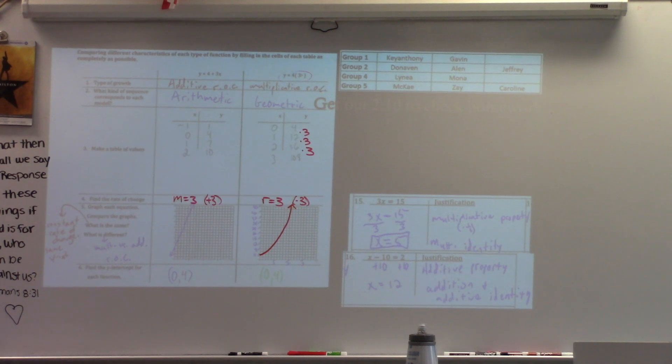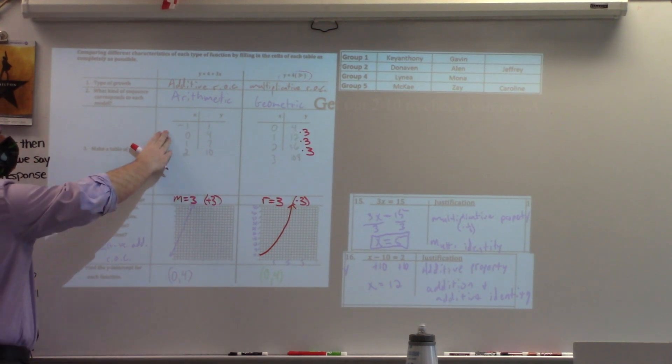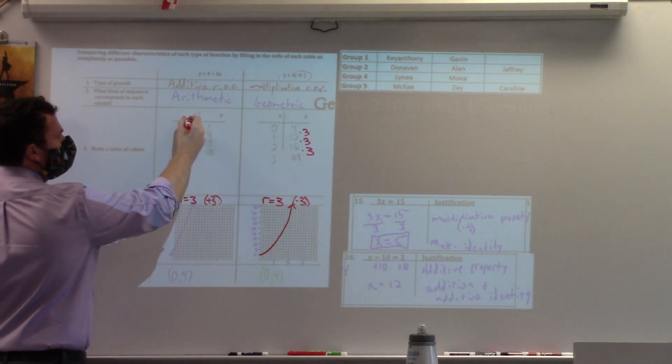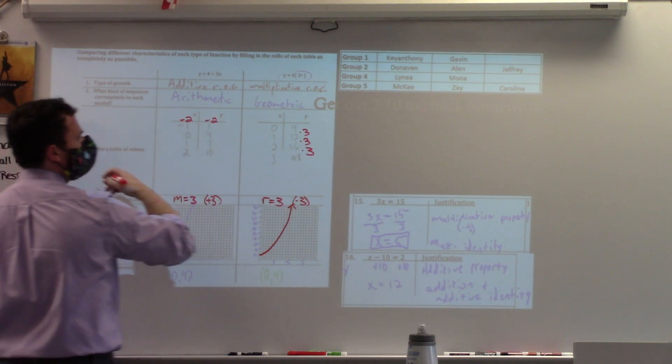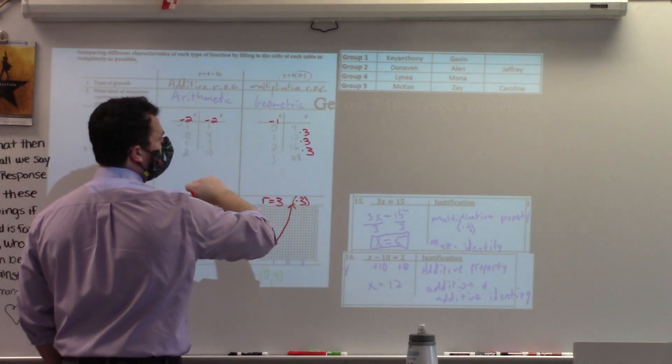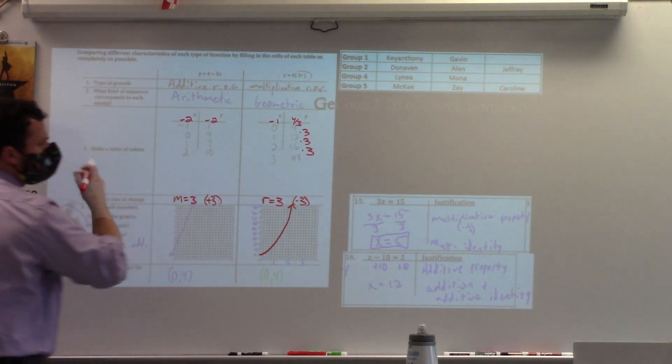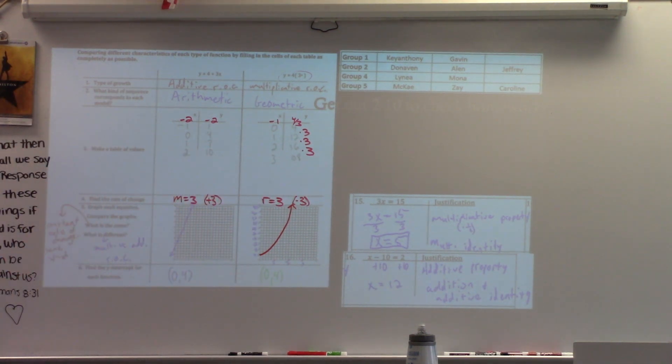One thing I do want to point out is on this one, I started with negative 1. But I could have very easily started with 0. I could have even started with negative 2, right? Over here, I could have started with negative 1. I've gotten some points there. I just depended where I started.